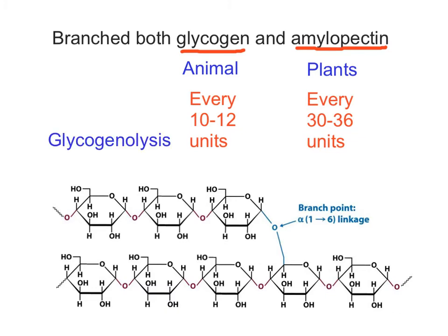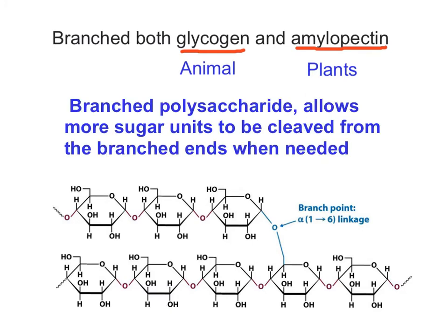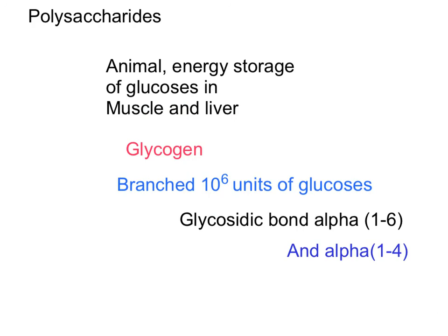When sugars are needed in the bloodstream, the ends of glycogen will be released upon hydrolysis by a process called glycogenolysis. Because glycogen is more branched than amylopectin, it can store more units of glucose in less space. While one molecule of amylopectin contains about 10,000 units of glucose, one molecule of glycogen can contain even a million units of glucose.